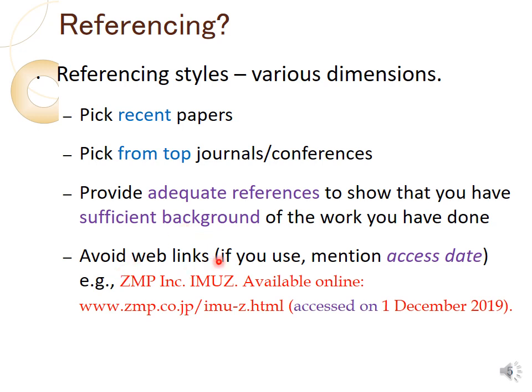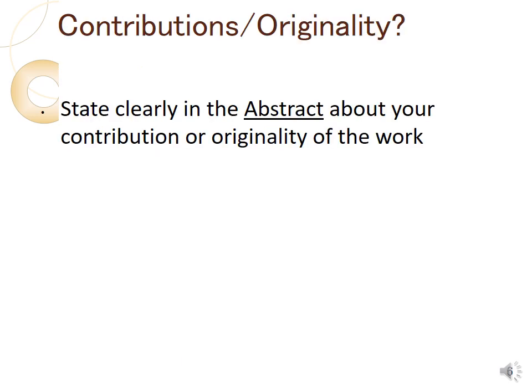Avoid web links where possible, but if needed, add the access date. Be careful: if a paper is rejected and resubmitted to another journal, by that time the access date may be over a year old, and a reviewer might think the work is outdated. Check again whether the link is still active and update the date. Also, do not mix referencing styles — follow the template consistently.